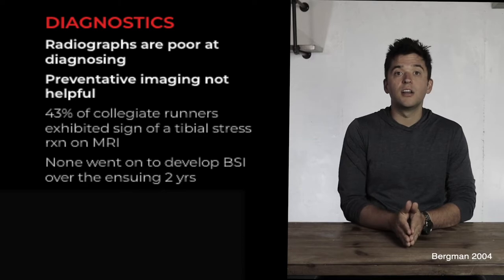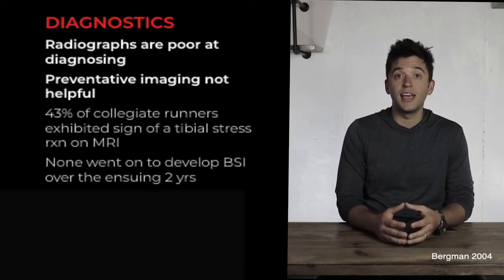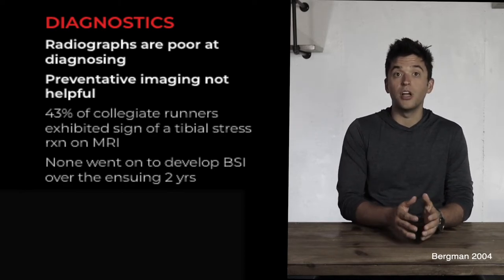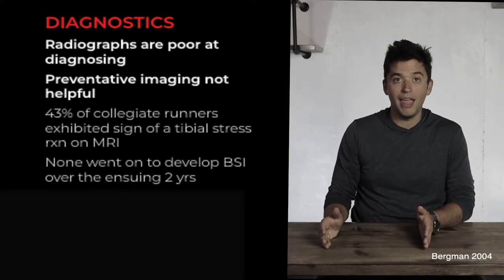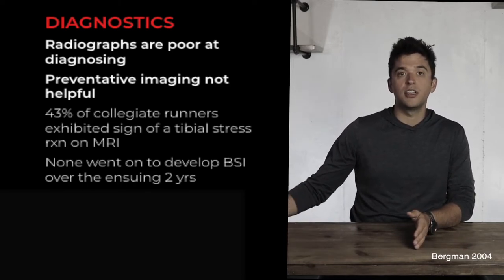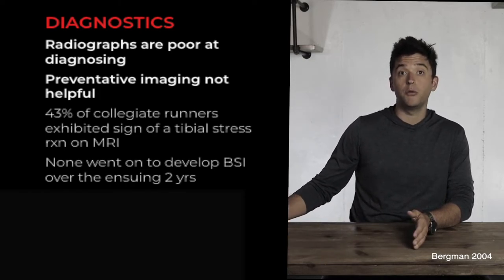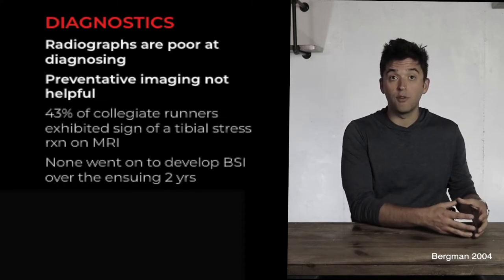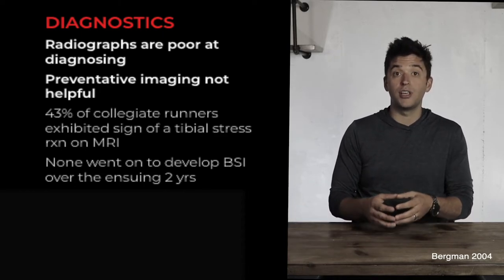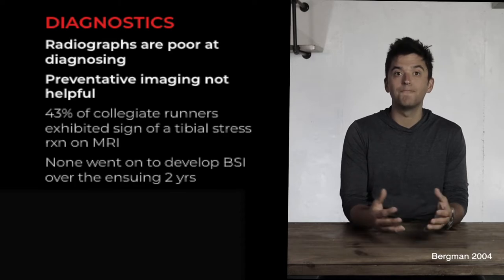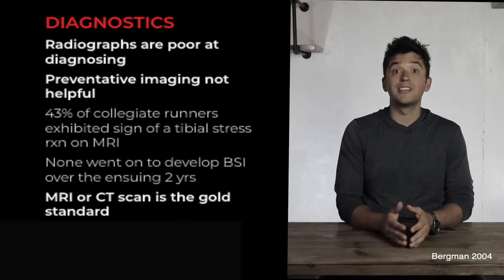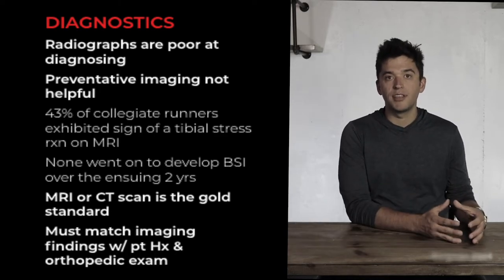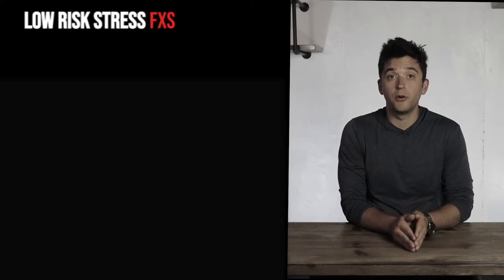Preventative imaging is not very helpful — a study on collegiate runners found 43% of a college team had tibial bone stress injury presentations on imaging but no pain, and none of them developed symptoms over the following two years. Our bones are always changing. MRI and CT scans are the gold standard for diagnosis — but imaging findings must correlate with clinical presentation.